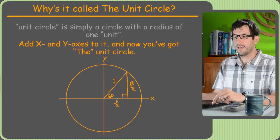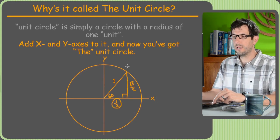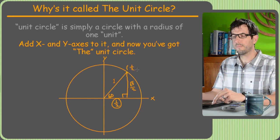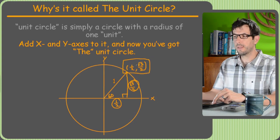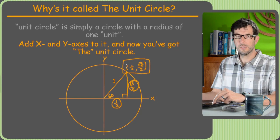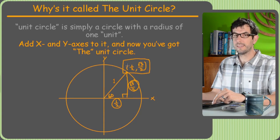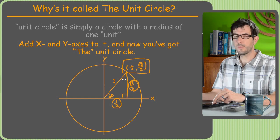It turns out that the 1/2 ends up being the x-coordinate of this point at the tip of the radius — the tip of the hypotenuse — and the vertical side is the y-coordinate. The coordinate of any point on the unit circle is going to be the cosine and the sine of the angle that that radius makes with the x-axis.